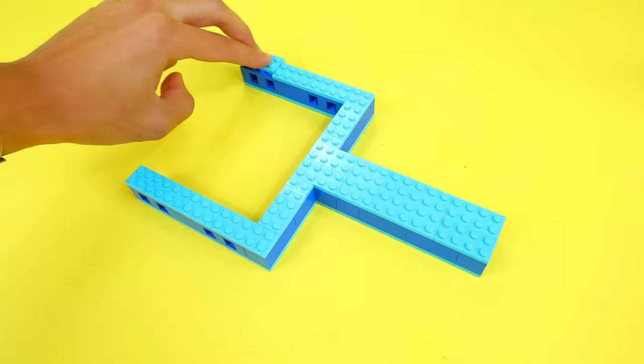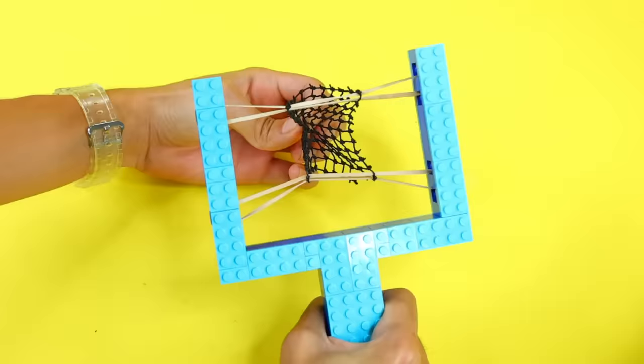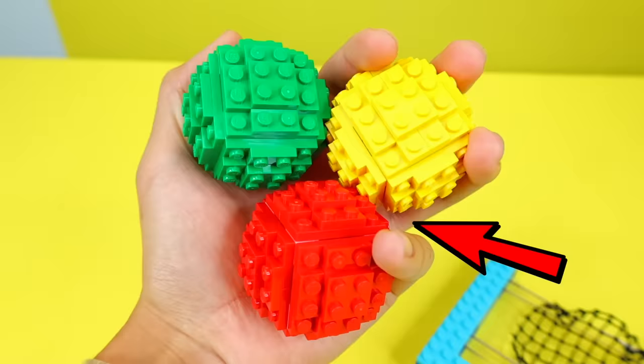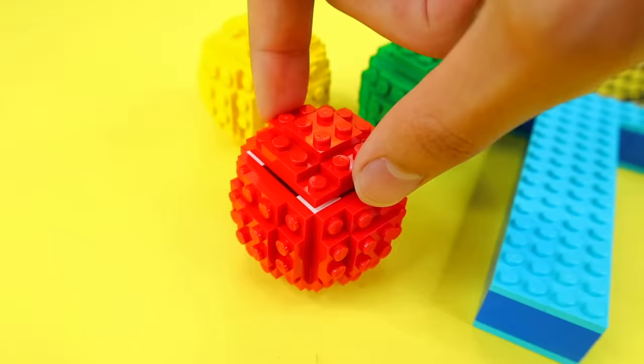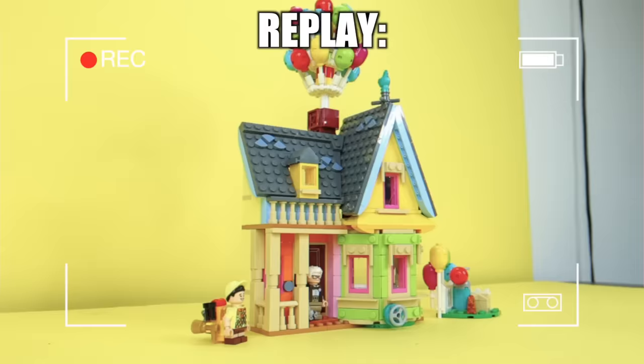What if we built a Lego slingshot? This one uses two rubber bands and a net piece in the middle to fling an object. And the objects we're gonna fling are these round balls that I built. I'm gonna fill this one up with studs, and let's see how explosive it is. Nice. That was pretty satisfying.